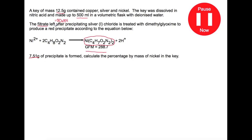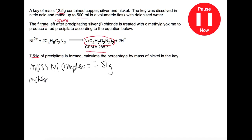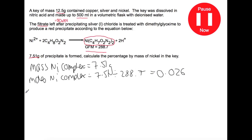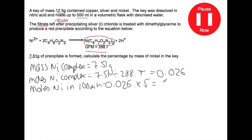Like before, we start at the end of the question and work back. We have a mass of the red precipitate — the nickel complex — of 7.51 grams. We've already been given the gram formula mass, so we can work out the moles of that precipitate, which turns out to be 0.026 moles. The number of moles of nickel in the precipitate is the same as in the 100 mL solution. We multiply by five to find the moles in the original 500 mL solution.